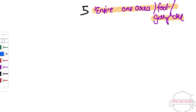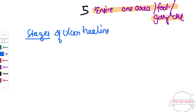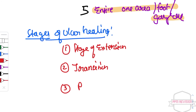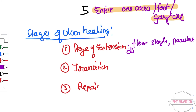Now looking at the stages of ulcer healing. There are three stages: stage of extension, stage of transition, and stage of repair. Under the stage of extension, the ulcer floor is covered with slough and purulent discharge, and inflamed edge or margin are present.